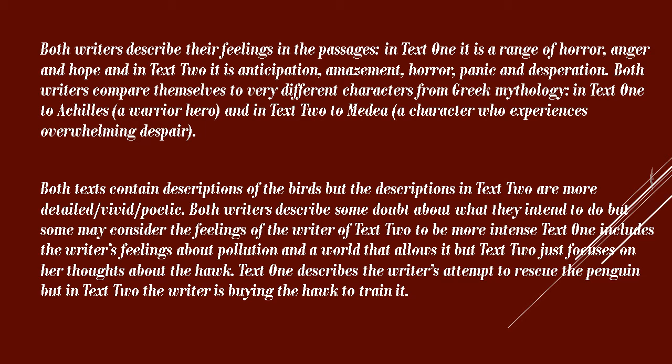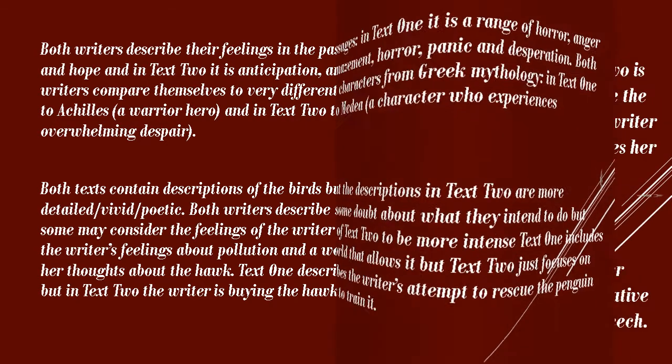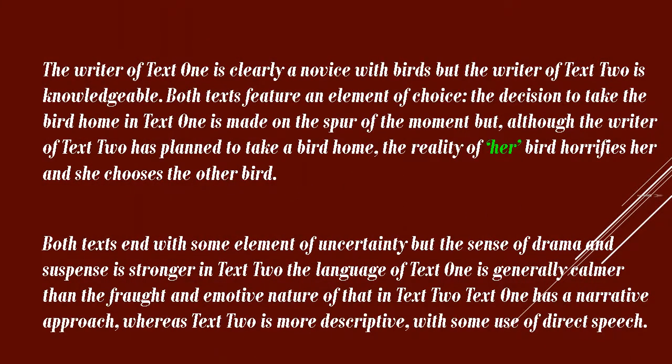Text 2, by contrast, just focuses on the writer's thoughts about the hawk. Text 1 describes the writer's attempt to rescue the penguin, whereas in Text 2 the writer is buying the hawk to train it. The writer of Text 1 is clearly a novice with birds, but the writer of Text 2 is knowledgeable.